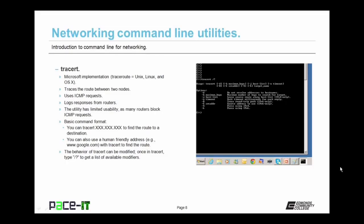Another useful utility is tracert — Microsoft's implementation of the traceroute command from Unix/Linux. It traces the route between two nodes as it goes through routers, also using ICMP requests. It logs the response from routers and the end node, but has limited usability as many routers block ICMP requests. It uses the same basic format as ping, beginning with 'tracert', and its behavior can be modified using forward slash question mark to see available modifiers.